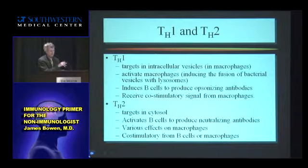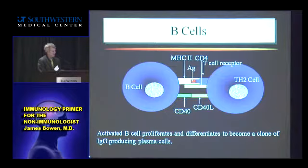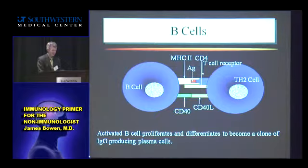B cells also have to be activated by this double lock-and-key system. It's usually a T cell that turns them on — you need to first activate the T cells, and the T cell then activates the B cells. When a B cell gets activated, it makes antibodies, which are then pumped out in huge quantities and can bind up their target.